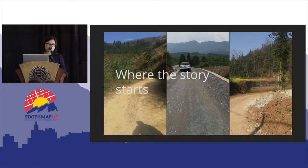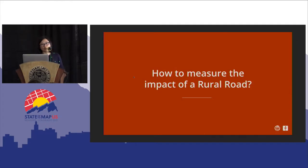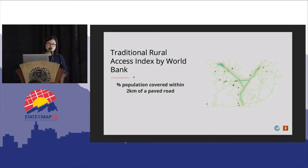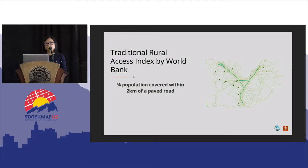For every project that the World Bank finances, we have indicators to track the results and evaluate how the project impacts people's lives. Traditionally, for all rural road projects financed by the World Bank, the indicator measures how many people are covered within a two-kilometer zone along the supported roads — essentially drawing a two-kilometer buffer along the roads and counting the people covered.